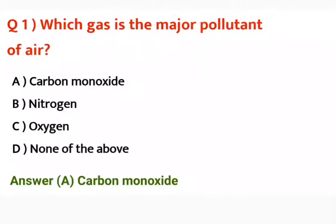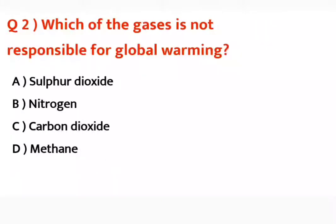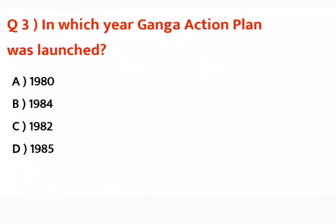Question number two: Which of the gases is not responsible for global warming? Sulfur dioxide, carbon dioxide, methane — these cause global warming. But nitrogen is not responsible for global warming. Is say global warming nahi hoti hai.